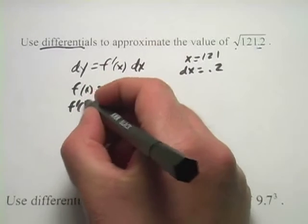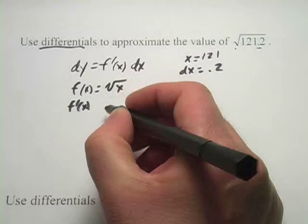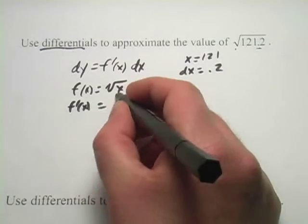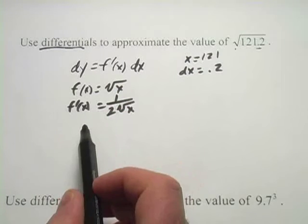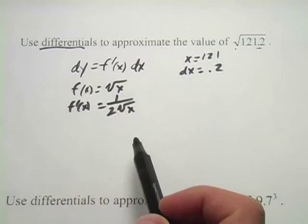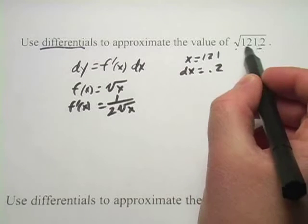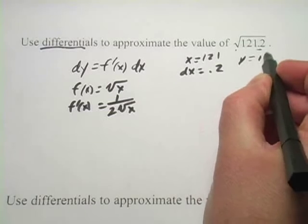So the derivative of this function is, that's x to the 1 half, so this is 1 half times x to the negative 1 half. We can write that as 1 over 2 times the square root of x. That's the derivative of the square root of x. Now, y, when we start out, y is 11, because that's what you get when you take the square root of 121.